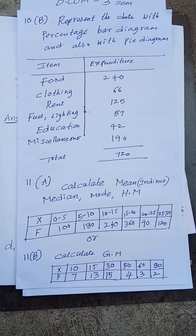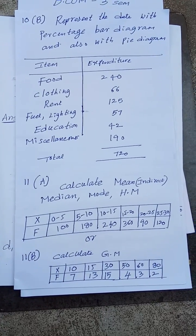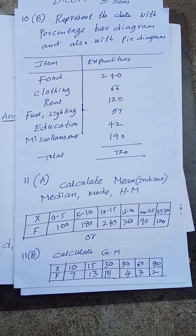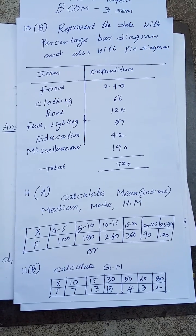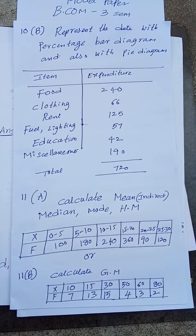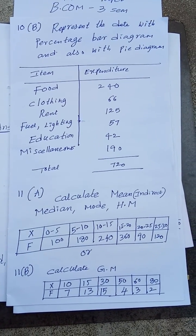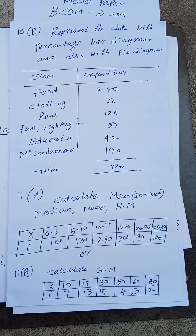Geometric mean is also important, my dear students. For question 10b, both a percentage bar diagram and a pie diagram — you have to use both for this question.